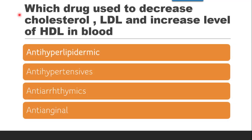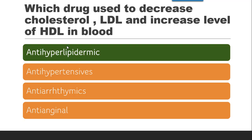The next question is: which drug is used to decrease cholesterol and LDL while increasing HDL levels in blood? All the options deal with lipids. HDL is high-density lipoprotein and LDL is low-density lipoprotein. The correct answer is an antihyperlipidemic drug, which acts to decrease lipid levels.